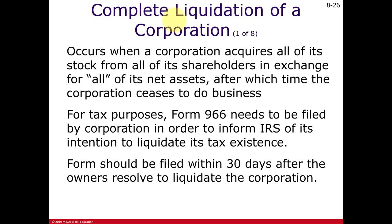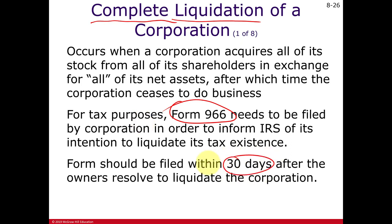Now let's talk about liquidating — specifically complete or full liquidation, as opposed to the partial liquidation covered in Chapter 7. When the corporation is going out of business, Form 966 must be filed within 30 days of determining the corporation will liquidate. This is in addition to filing the final Form 1120 for the corporation.